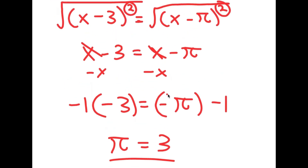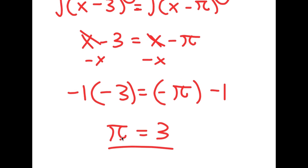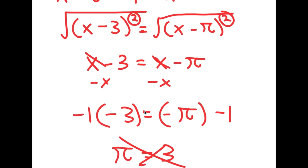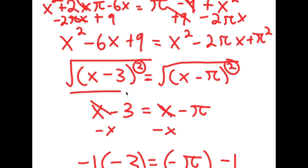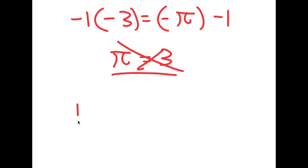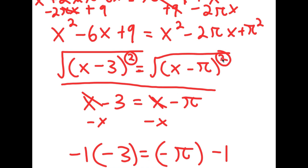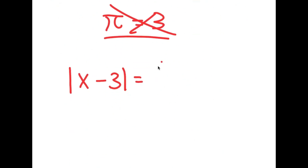So where did I go wrong? Because obviously we know that pi is not equal to 3. Well, I actually went wrong on the step where I said that the square root of x minus 3 squared and the square root of x minus pi squared is equal to x minus 3 and x minus pi respectively. This is actually not true. The square root of x minus 3 squared isn't equal to x minus 3 — it's equal to the absolute value of x minus 3. And same goes with the square root of x minus pi squared: it's equal to the absolute value of x minus pi.